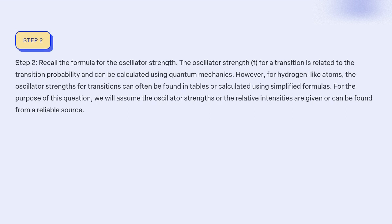Step 2: Recall the formula for the oscillator strength. The oscillator strength f for a transition is related to the transition probability and can be calculated using quantum mechanics. For hydrogen-like atoms, oscillator strengths for transitions can often be found in tables or calculated using simplified formulas. For this question, we assume the oscillator strengths or relative intensities are given or can be found from a reliable source.